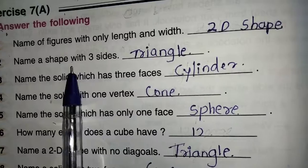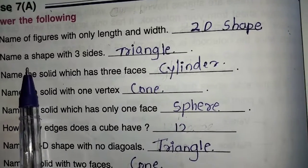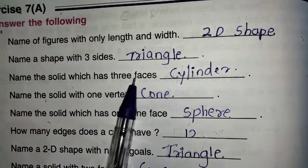Now second one, name a shape with 3 sides. It will be having the 3 sides. It is known as a triangle.